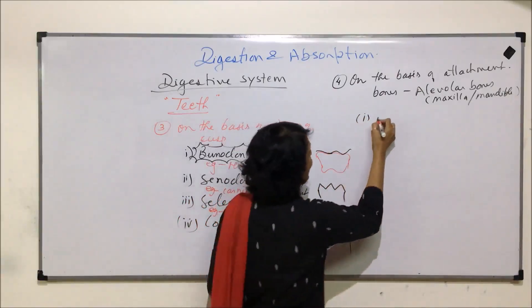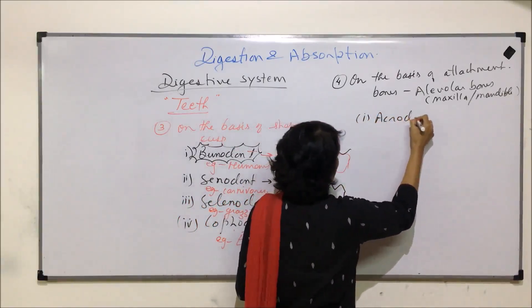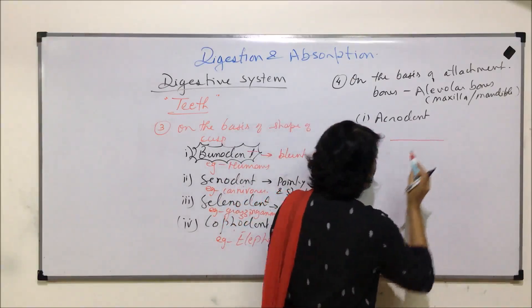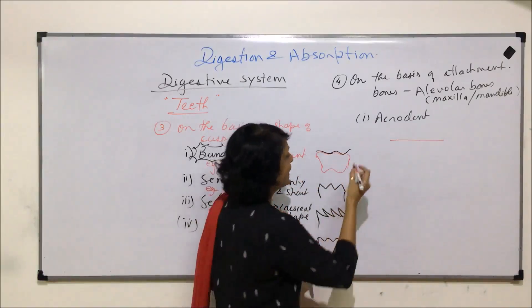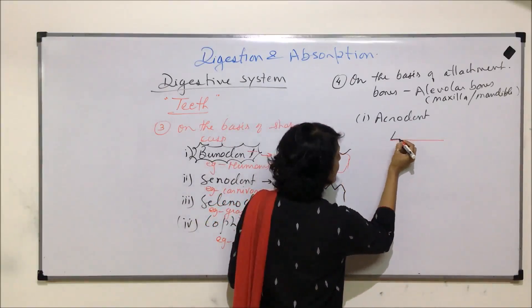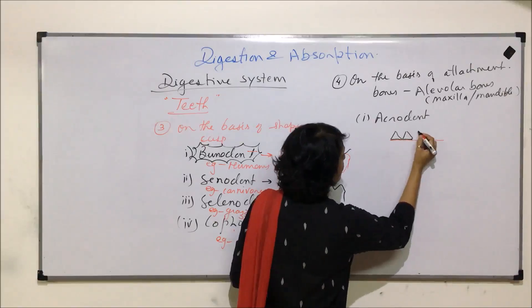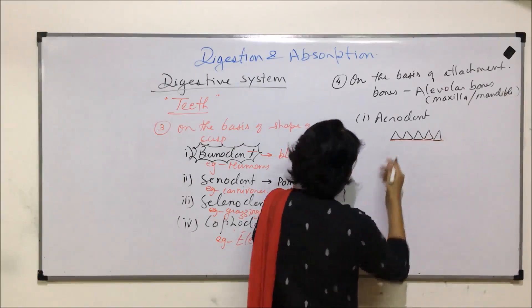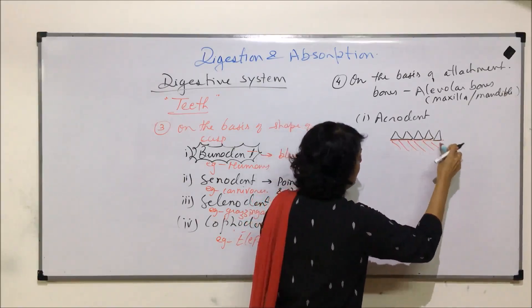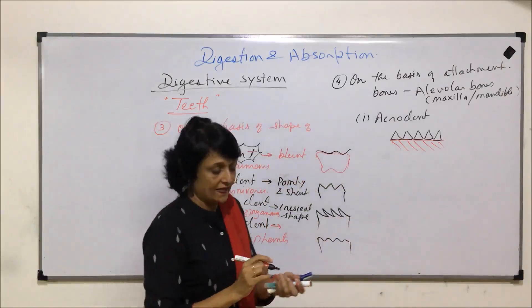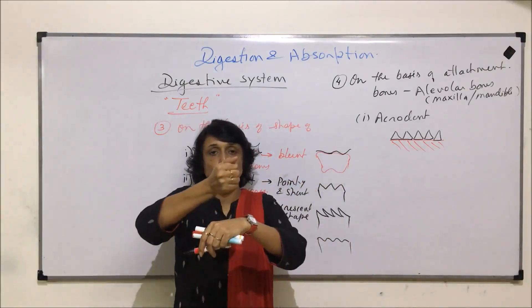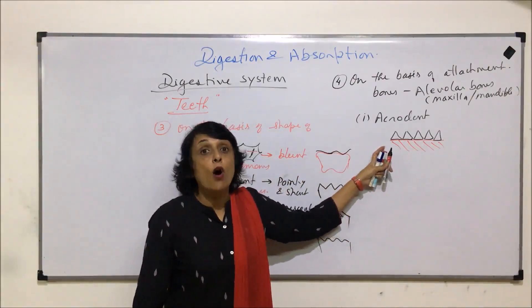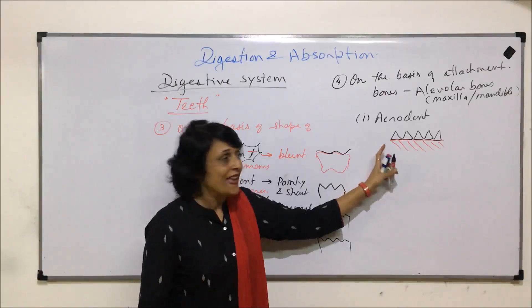Now, attachment wise, the first attachment is called acrodont. In acrodont arrangement, if this is the bone to which or on which these teeth are attached, the attachment is just superficial. That means the teeth are simply placed over this bone. So this is the bone that we have drawn and these are the teeth. That means if this is the surface of the bone, the tooth is simply placed like this, just attached like this. And that is why they fall off very easily.